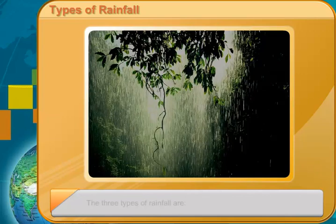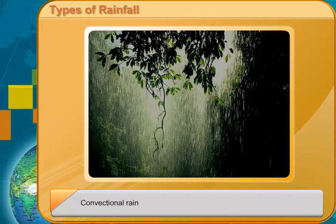The three types of rainfall are orographic rain, convectional rain, and cyclonic or frontal rain.